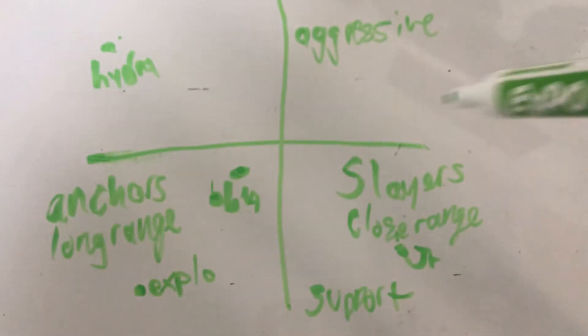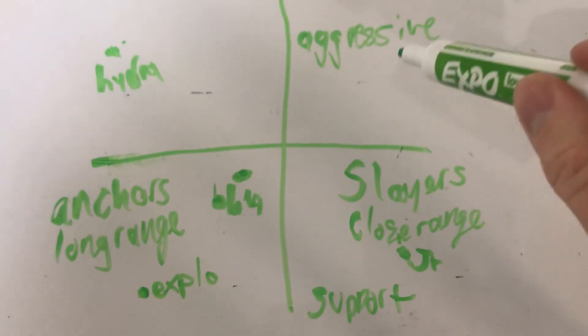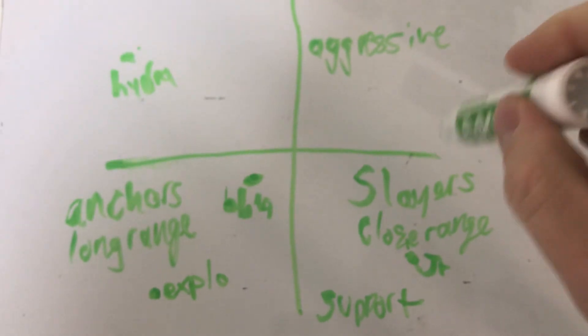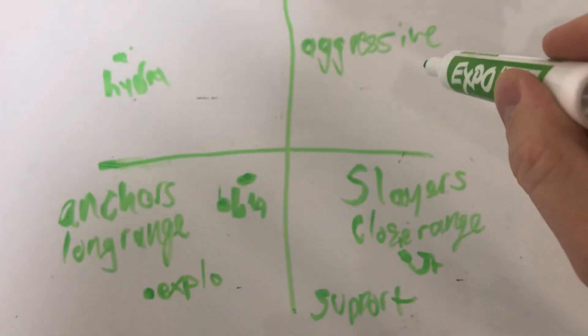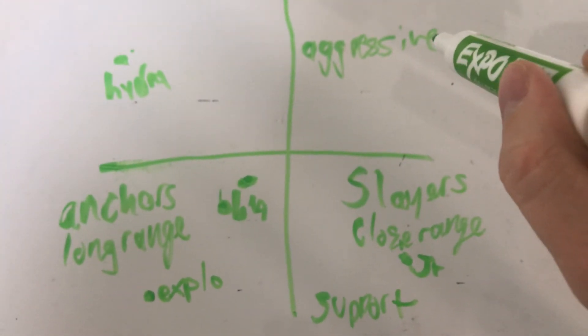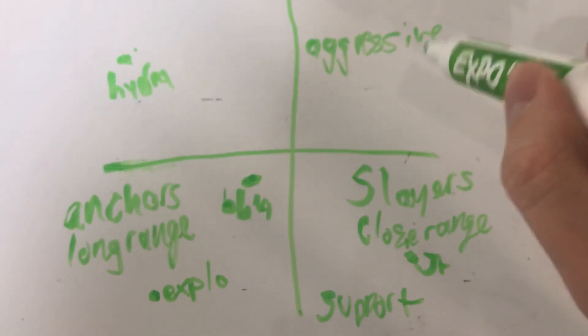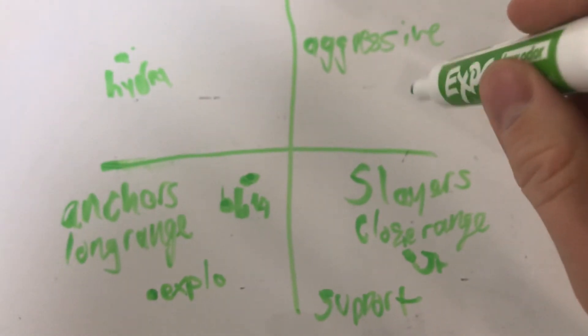And I mean, like the Carbon right, that's clearly a close-range aggressive slayer. The junior is a close-range aggressive slayer. Or not the Junior, the Tri-Slosher. Yeah, thanks for watching, let me know what you think.